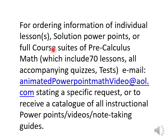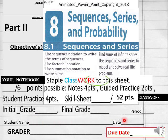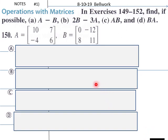Hello everybody, getting ready to do lesson 8.1 part 2, precalculus math today. For today's lesson you have six points to go into your notebook guide or your notebook, and we'll have 52 points on your classwork sheet. Students, write your name, date, and period. If you're homeschooling, put your due date down here.